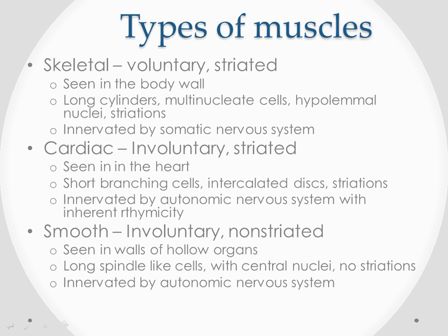Cardiac muscle is involuntary but it is striated, seen in the heart and just the beginnings of the blood vessels arising from the heart. The cells are short, branching cells with a central nucleus, and the muscle shows striations. In between cells you might see what is known as an intercalated disc. Because they are involuntary, they are innervated by the autonomic nervous system. They also have the capability of contracting on their own - the nervous system influences them, but the heart has an inherent rhythmicity.